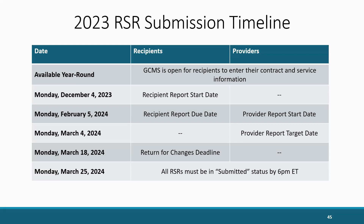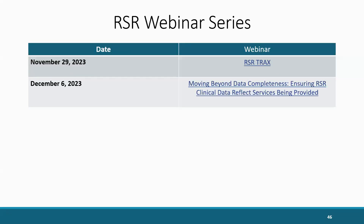This timeline can be viewed and downloaded at any time on the TargetHIV website. Here are some upcoming webinars that will be useful in completing the RSR. On November 29th, you can join for an introduction to TRAX, a helpful tool used for creating the RSR client-level data XML file. On December 6th is a summary of the 2022 RSR data. The links for these webinars will take you directly to the registration pages, and the rest of the RSR webinar series should be up soon on the TargetHIV website.